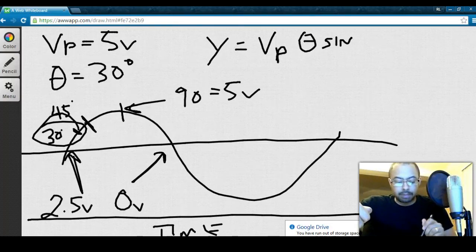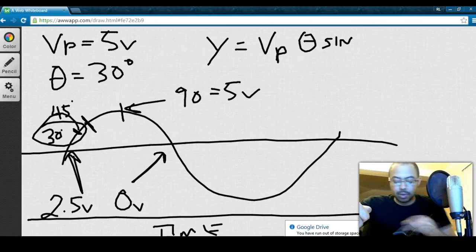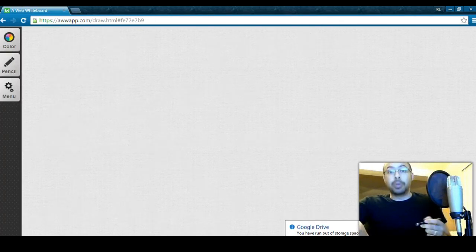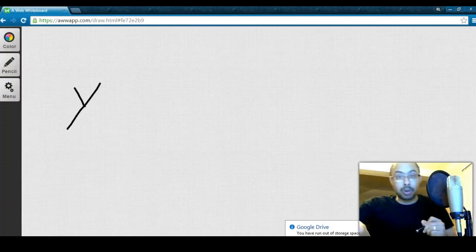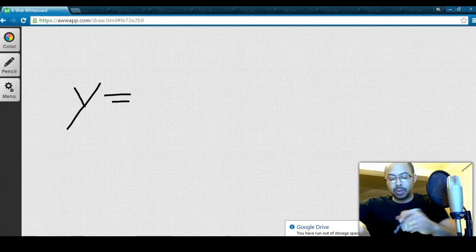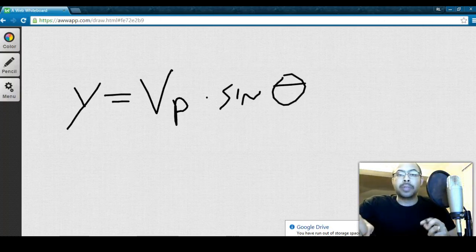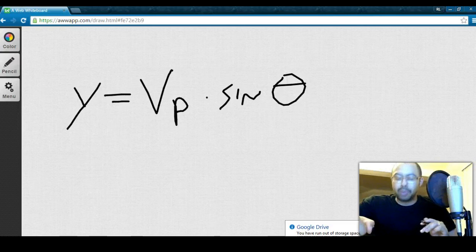To recap, your formula for instantaneous voltage, which I'm going to call Y. It's going to equal the voltage peak times the sine of theta. Alright? So, that right there will give you instantaneous voltage.